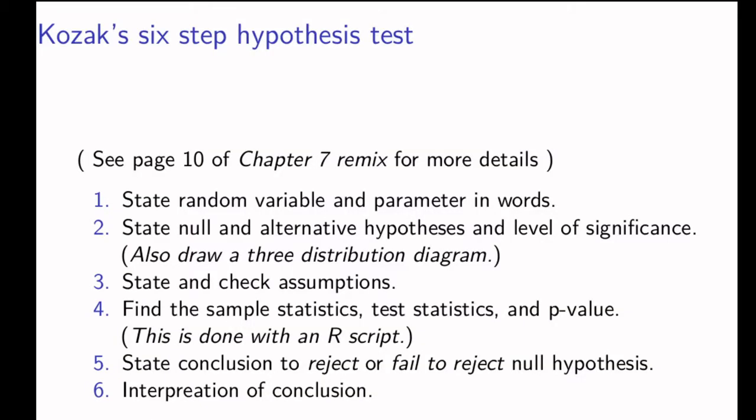Catherine Kosak gives a six-step process for completing a hypothesis test. The first step is to state the random variable and the parameter in words. In this particular case, our random variable is the amount of sugar in a children's cereal. The parameter that we're looking at is the average amount of sugar in a serving of children's cereal.